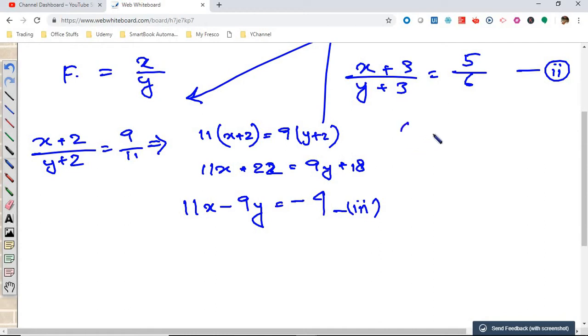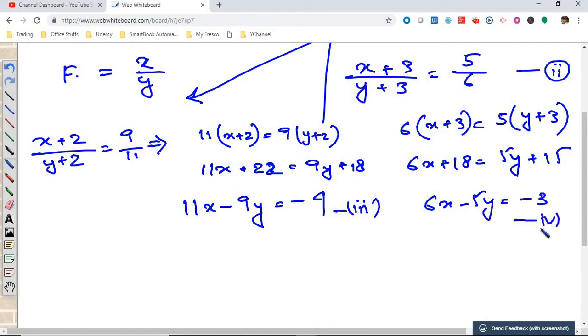And the fourth equation becomes x plus 3 equals 5 times y plus 3 by 6. This becomes 6x plus 18 equals 5y plus 15. This becomes 6x minus 5y equals minus 3. This becomes our fourth equation.